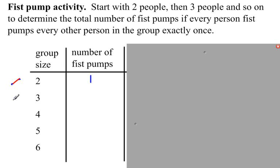If we have three people, we could have person one and two fist pump, two and three fist pump, and one and three fist pump for a total of three. If we have four people, let's let those people be represented by dots. Person one can fist pump person two, three, and four. Person two already fist pumped one, so they also have to do three and four. And then the only one left is three and four, and we count one, two, three, four, five, six.